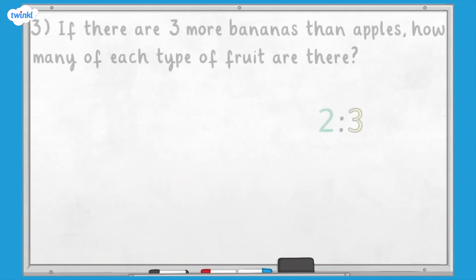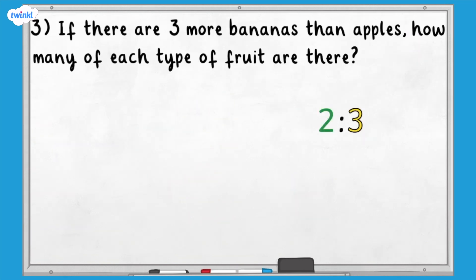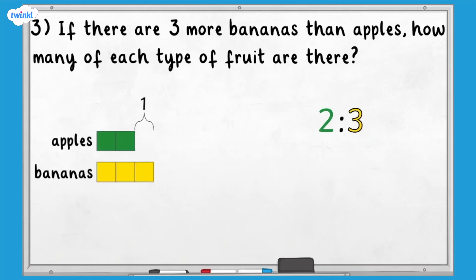Question three: if there are three more bananas than apples, how many of each type of fruit are there? For this type of question, we need to look at the difference between the numbers in the ratio because we are comparing them. We'll use a bar model to solve this problem.